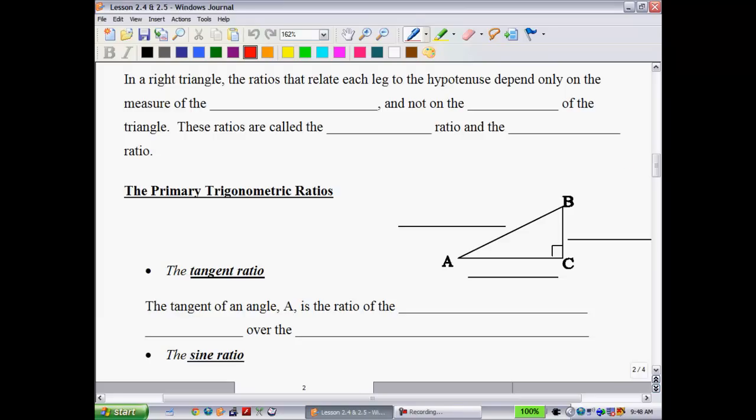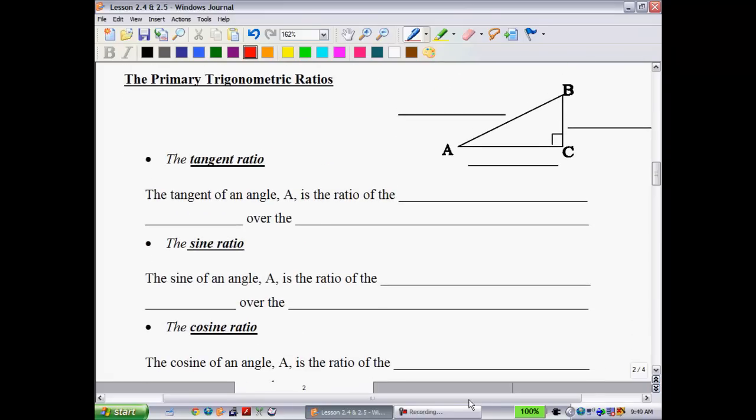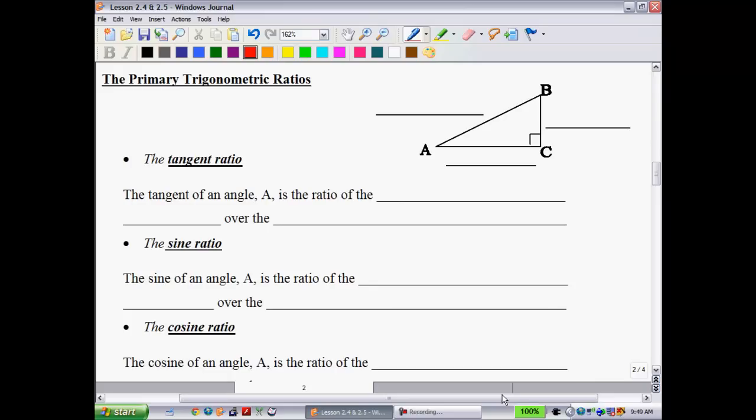At this point you should be pausing and going ahead and trying that out. All right, let's get going with the notes here. In a right triangle, the ratios that relate each leg to the hypotenuse depend only on the measures of the acute angle and not on the size of the triangle. So these ratios are called the sine and the cosine ratios.